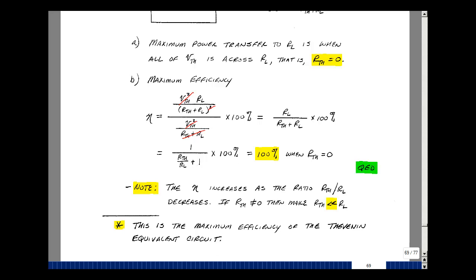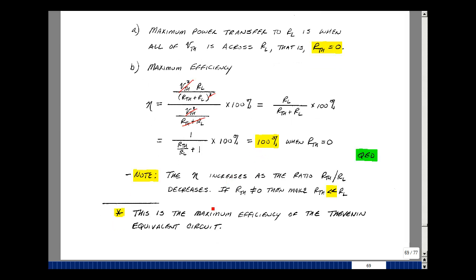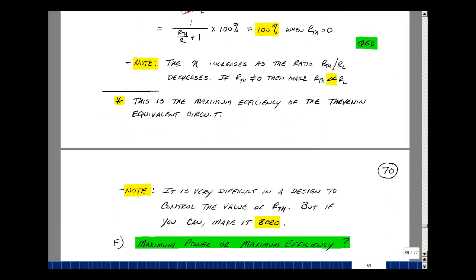Now sometimes it's not possible to get R Thevenin equal to zero, but if you keep the ratio very small, then your efficiency is very high. But if you can control the value of R Thevenin, make it equal to zero. Take a look at a technique in Chapter 4 using feedback. We're going to do something very close to that.